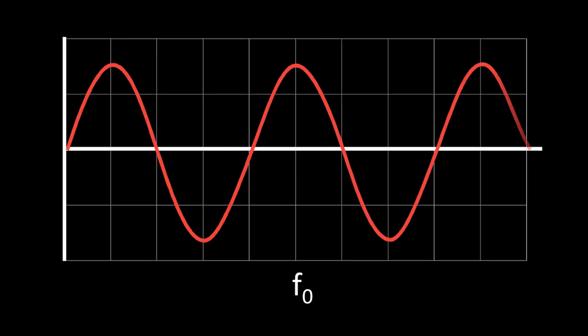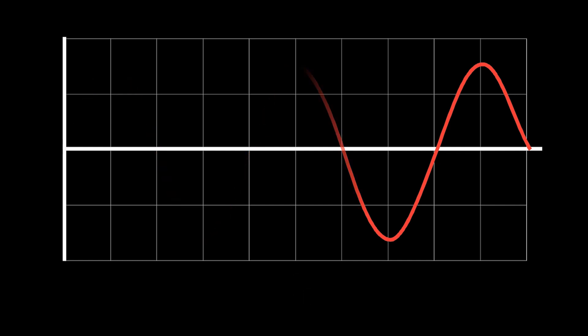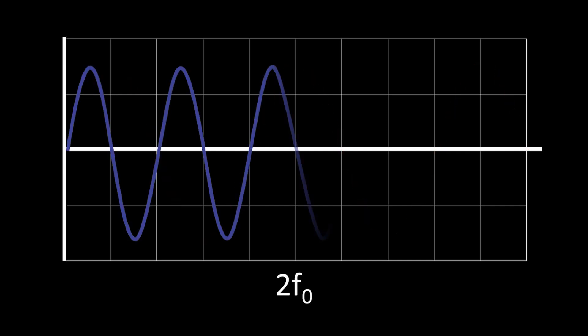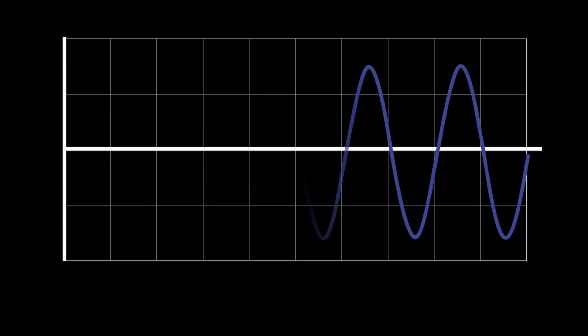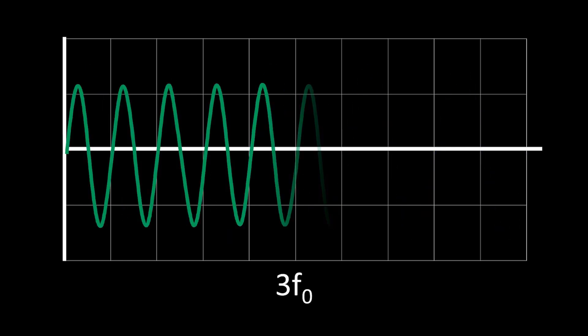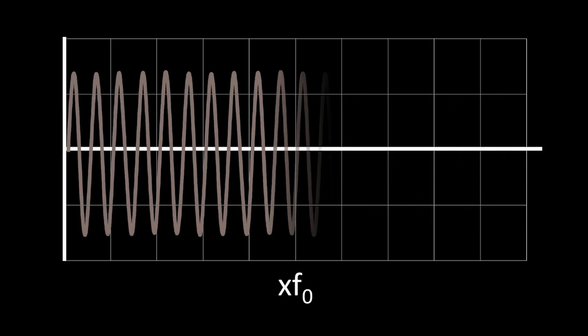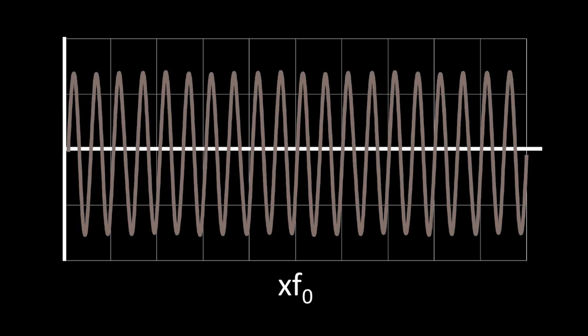Let's look at what harmonics are exactly. If we have a single frequency like this one, harmonics are integer multiples of that frequency. In this case, two times the fundamental, three times the fundamental, and x times the fundamental.